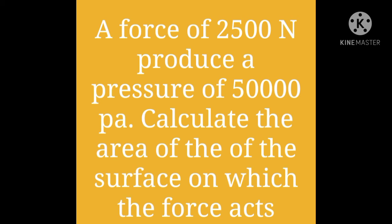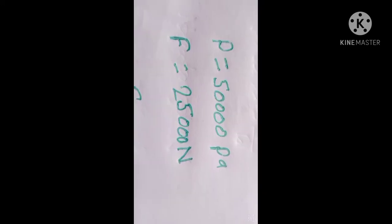Our next question is: a force of 25,000 Newton produces a pressure of 50,000 Pascal — calculate the area of the surface on which the force acts. We have pressure equal to 50,000 Pascal and force equal to 25,000 Newton. Using pressure equals force divided by area, we get area equals 25,000 divided by 50,000. The 50,000 and 25,000 cancel to give one half, so area equals 0.5 meter square.